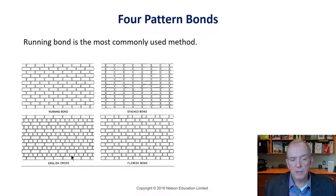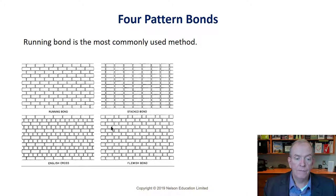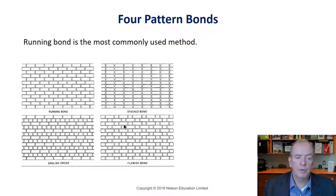English cross bond has a header course every second course — a very strong bond. Flemish bond has a header every second brick, so you go header, stretcher, header, stretcher, and then they lap on the next course. It gives a very nice cross pattern that can be very decorative. Sometimes in historical buildings, you'll see the cross pattern stand out really nicely.